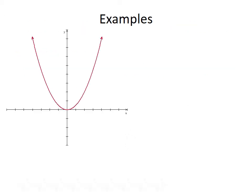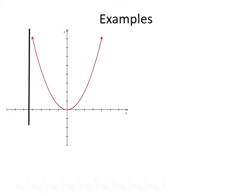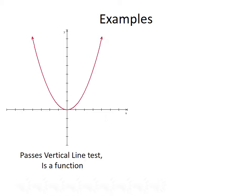Let's look at a couple of examples. First, we want to determine if this is the graph of a function. To check, we'll employ the vertical line test. We're going to watch the vertical line go across the graph, and as long as it only intersects at one point, this will be a function. As the vertical line passes through, we see that every time it intersects the graph it's only at one point, so this graph passes the vertical line test — it is the graph of a function.